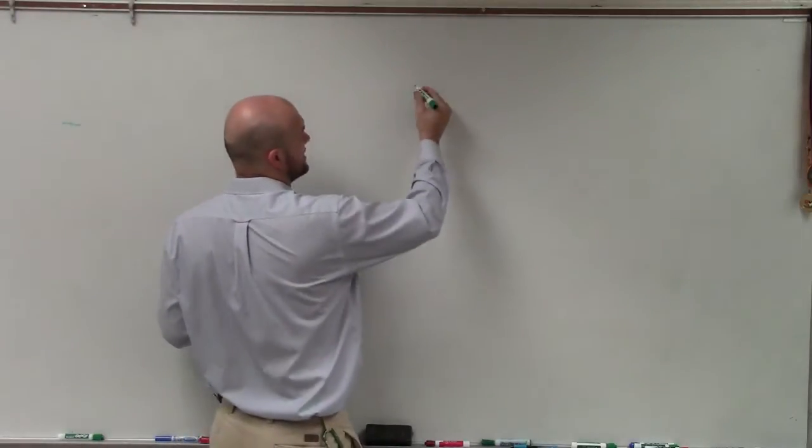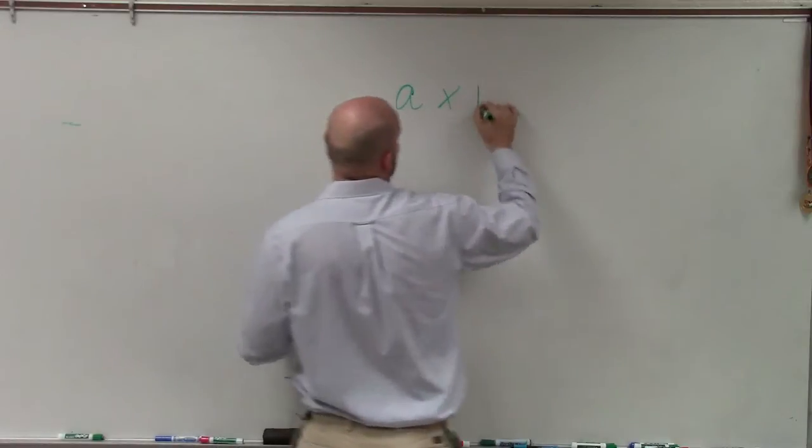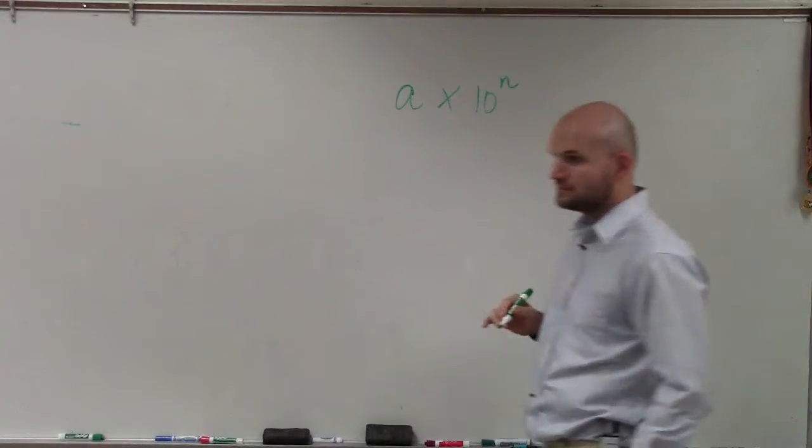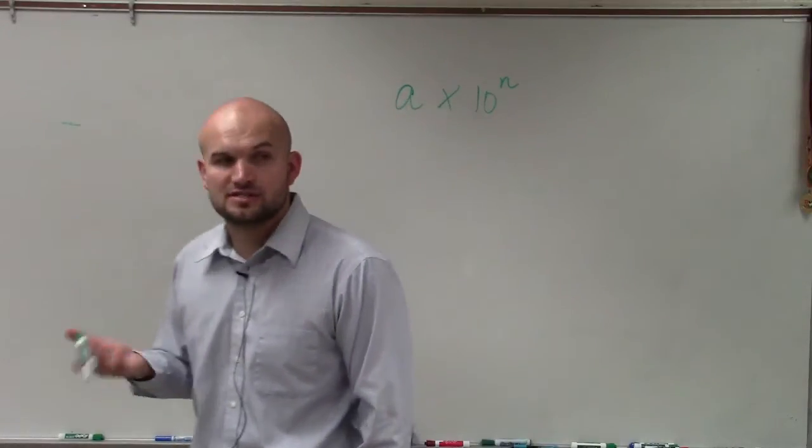So basically, ladies and gentlemen, scientific notation is in the form of a times 10 to the n. It's pretty much a way for us to be able to write very large numbers and very small numbers.